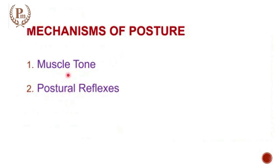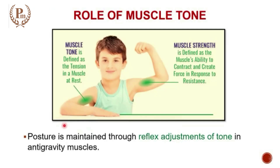Here again you will have to recollect what is muscle tone. Tone of a muscle is the passive resistance which is offered to a movement, and this passive resistance to movement is applicable because there is a sustained contraction. Continuously there is a small amount of contraction in our muscles even when the muscle is at rest. Muscle tone is defined as the tension in the muscle at rest.